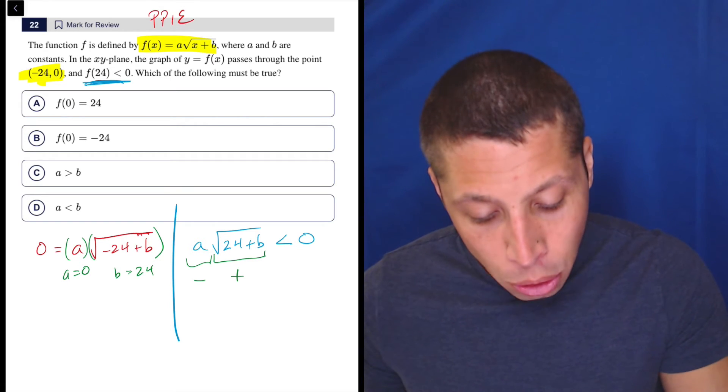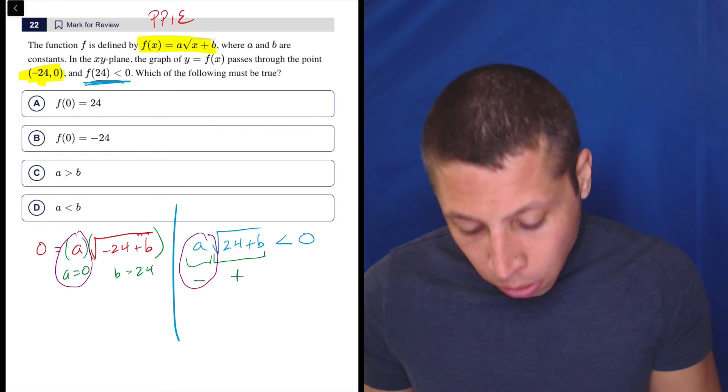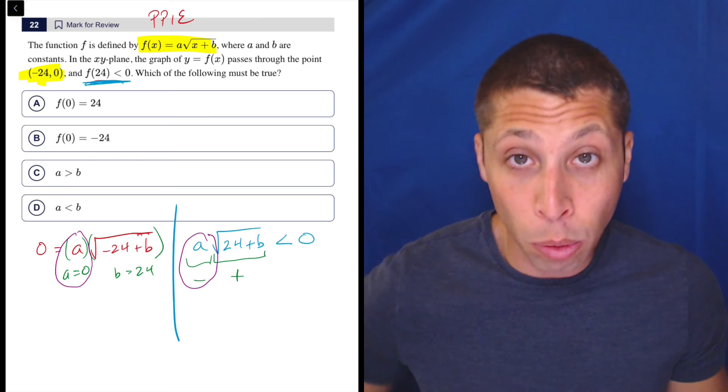But now I have two things that are in conflict. If A is negative, then it's not also true that A is equal to 0.